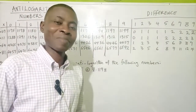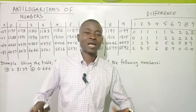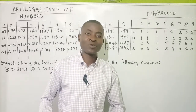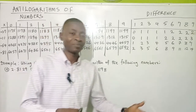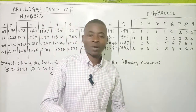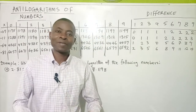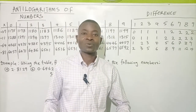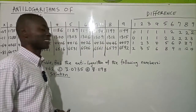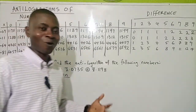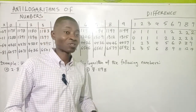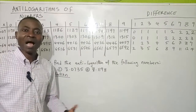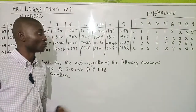Welcome to Joshua Co Online Maths. In today's class we'll be talking about how we can easily find the antilog of numbers. In our previous video we explained how you can easily find the logarithms of numbers — numbers less than one and even greater than one. In this video we'll be explaining how you can easily find the antilog of numbers, both less than one and greater than one. We have four questions on the board to demonstrate how we can easily do that, because it's actually very simple.